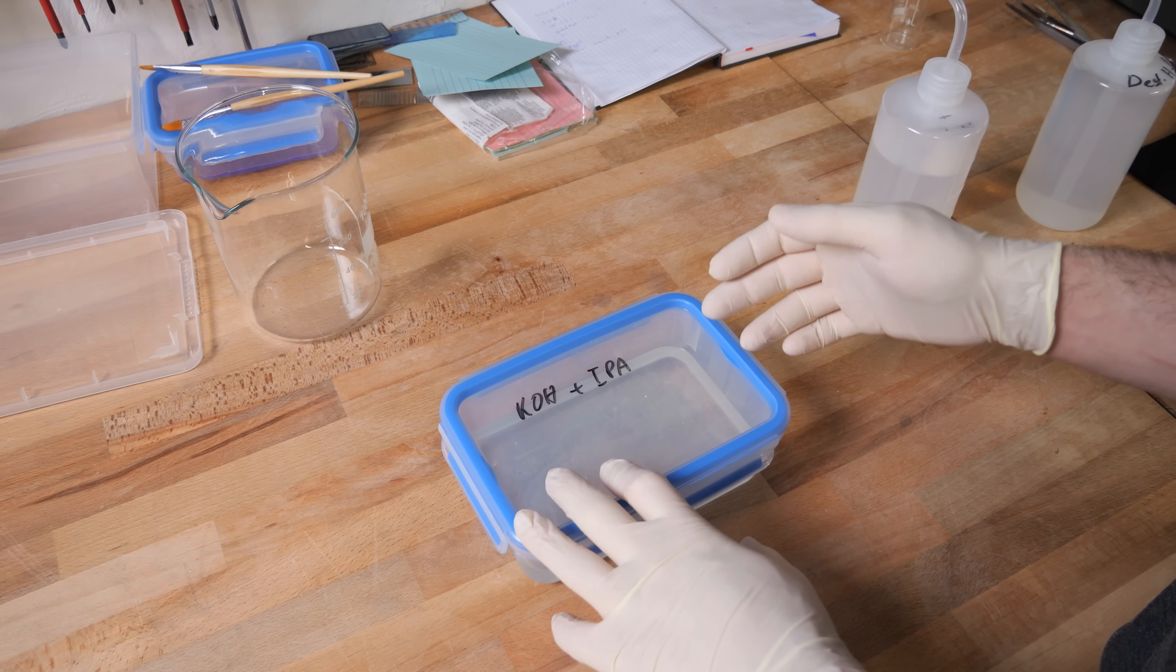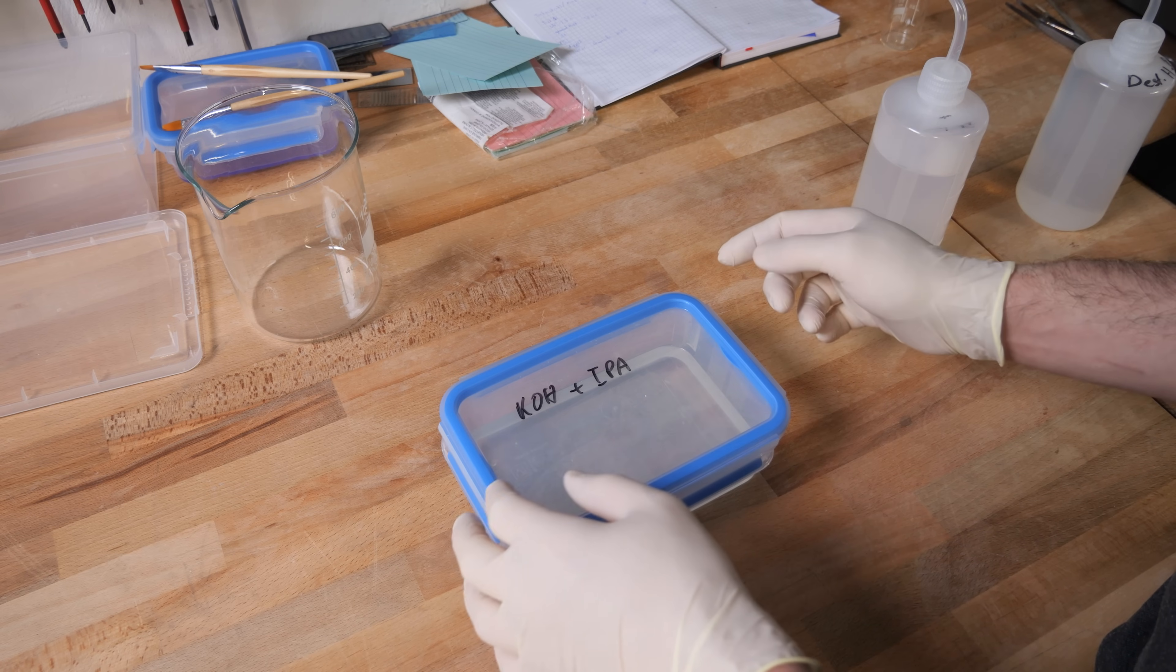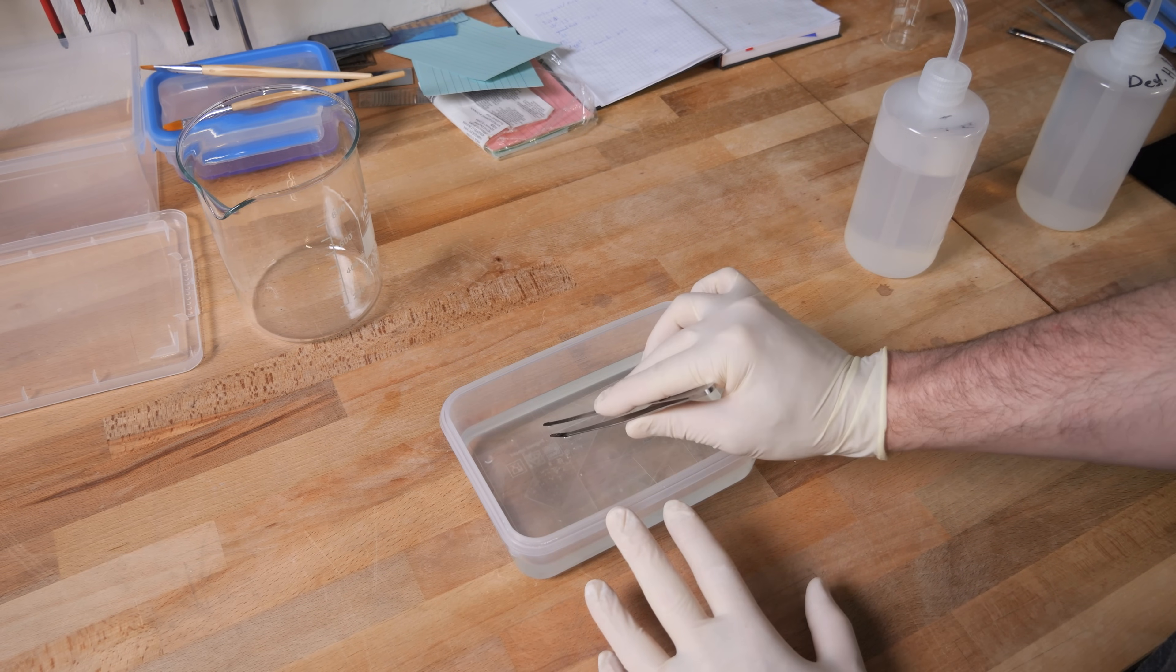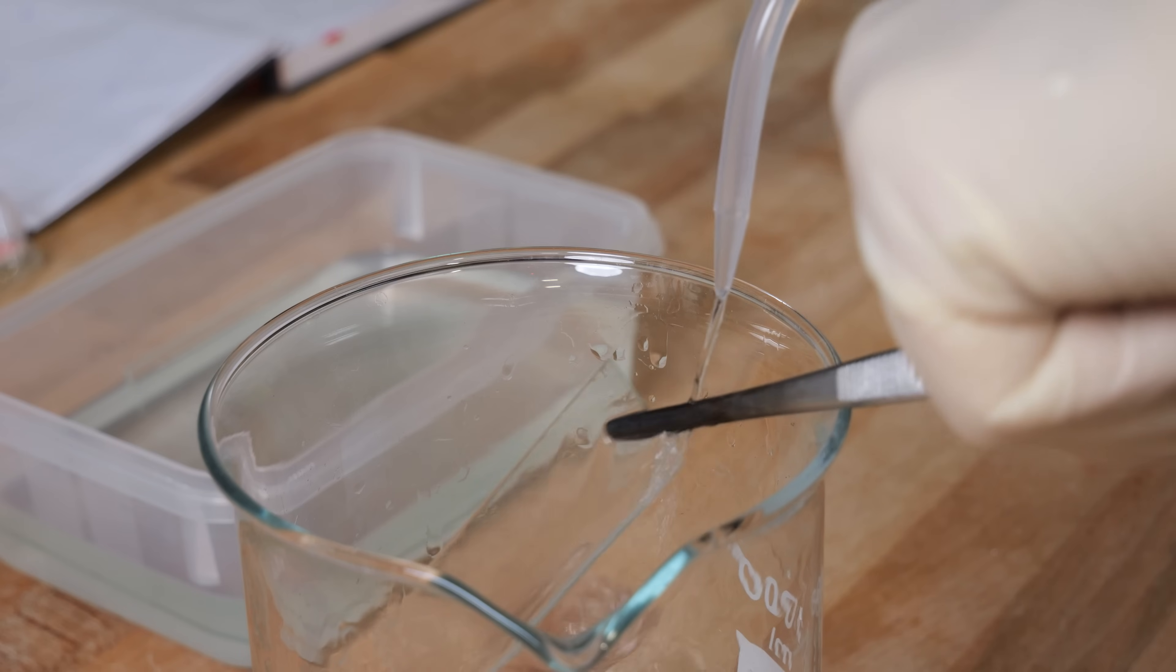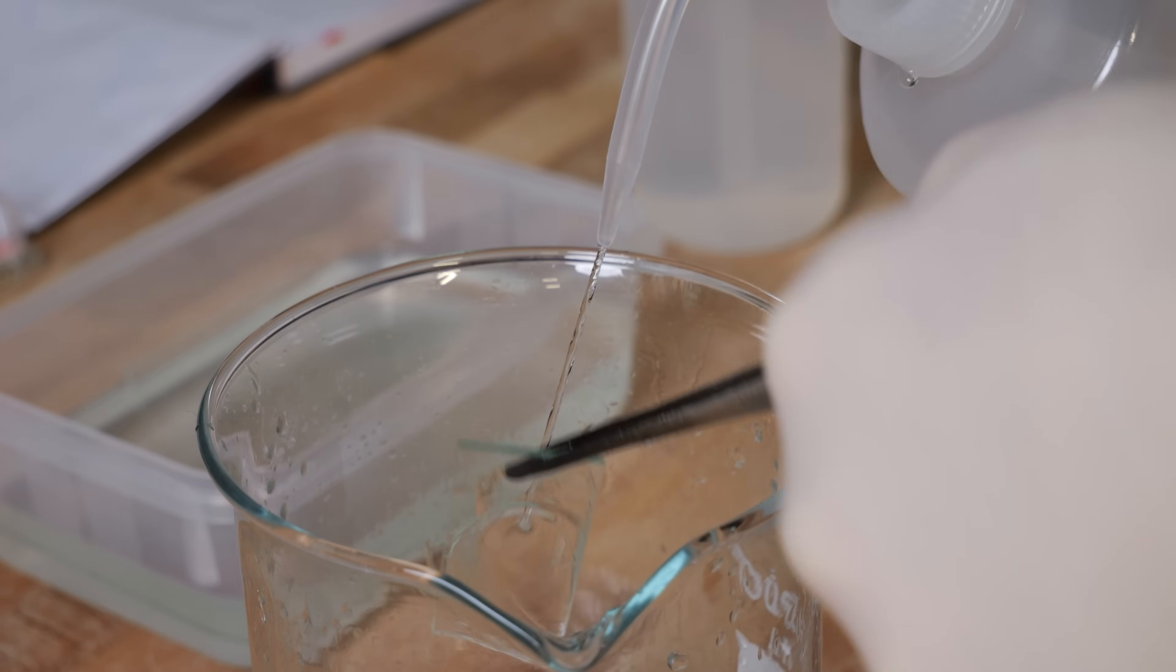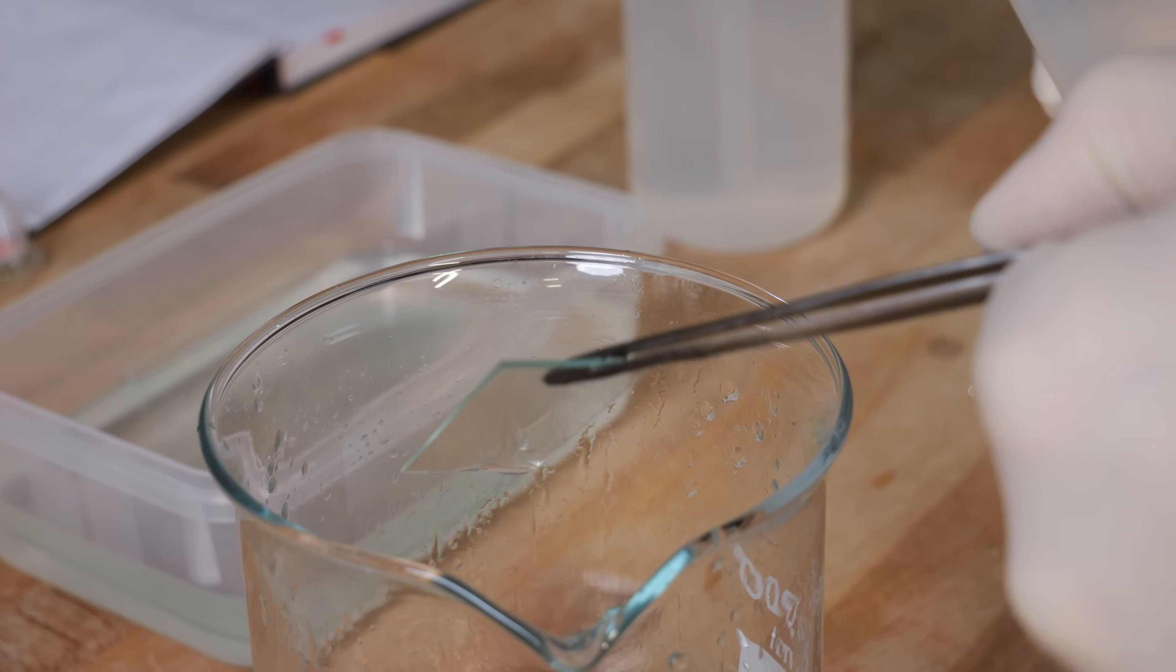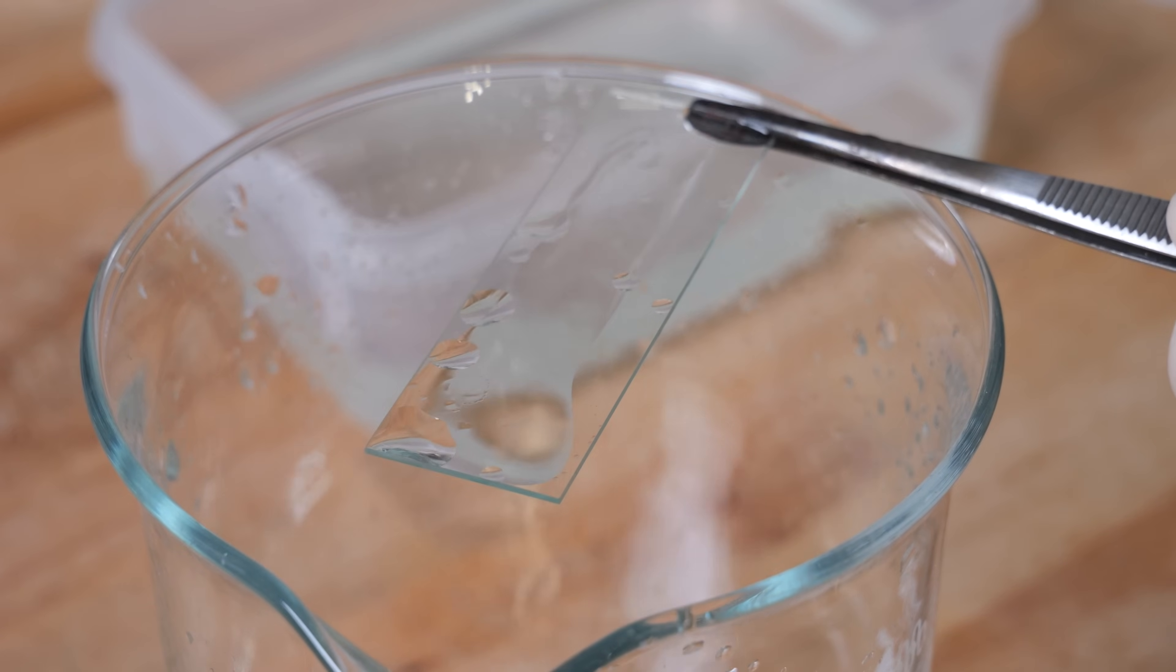To have clean microscope slides which I can later coat I keep them in a solution of potassium hydroxide in IPA for a few days. This will remove most of the organic contamination on the slides and you should really wear gloves and especially eye protection when working with IPA and potassium hydroxide solutions because they are pretty nasty. I then just take them out and rinse them with IPA and distilled water. It is very important to use distilled water as your last step because even if you are using 99.99% pure IPA it will leave some residue.